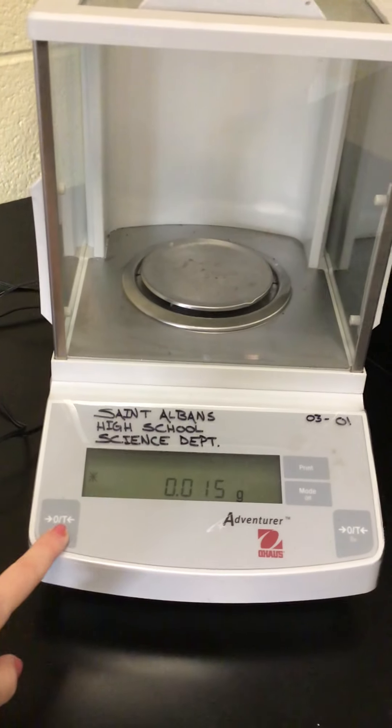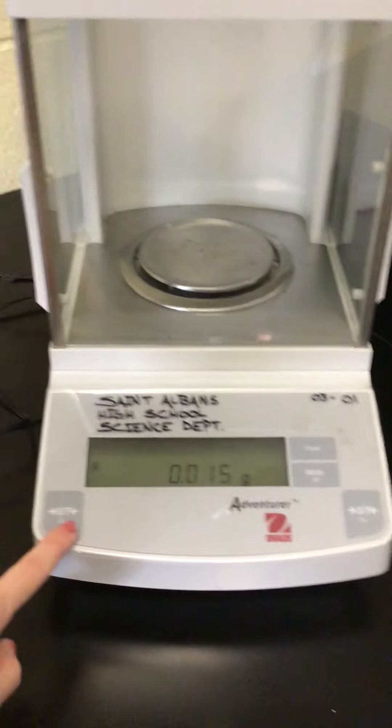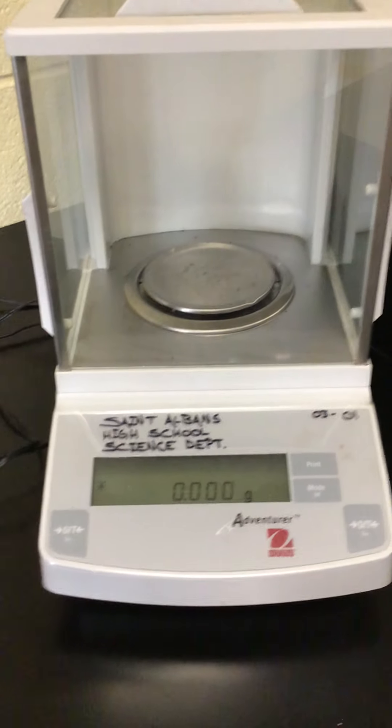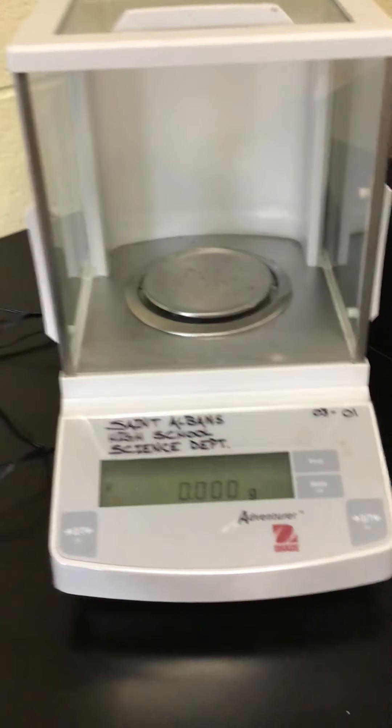And so my button on the scale right here is T for tare. I actually have two different ones. I'm just gonna hit it and it now says that it's 0.000 grams and I'm free to go through and weigh something.